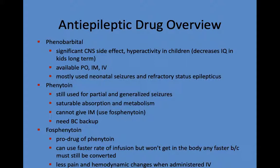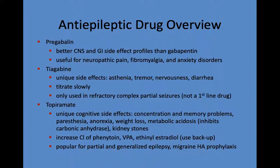Phenobarbital is an older drug with significant CNS side effects and can decrease IQ in children with long-term use. It's available in multiple forms and has many drug interactions. Phenytoin is effective but has unusual zero-order kinetics — familiarize yourself with that when dosing. Women may need birth control backup due to drug interactions. Pregabalin is now more commonly used for neuropathic pain, fibromyalgia, and anxiety than for seizures; it is a controlled substance and is an option for treatment-refractory patients.